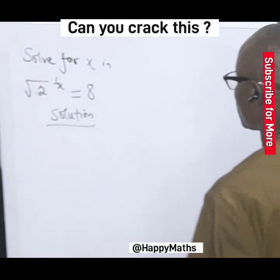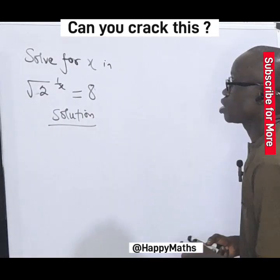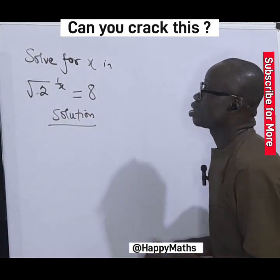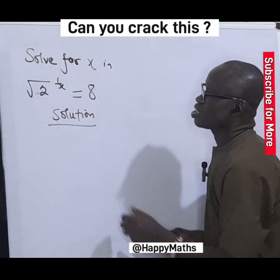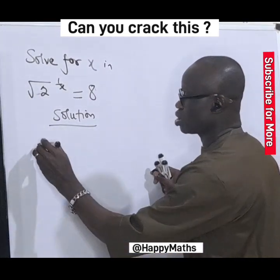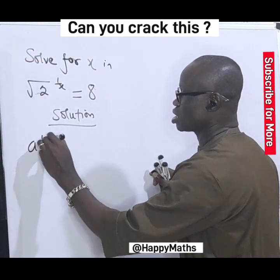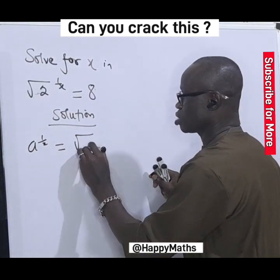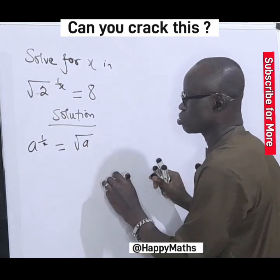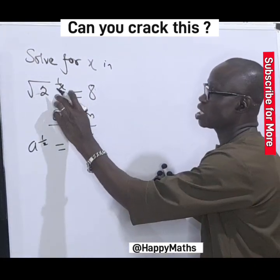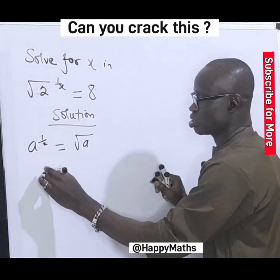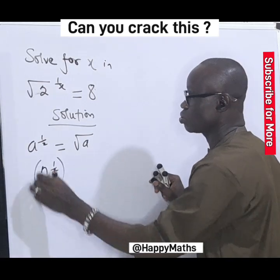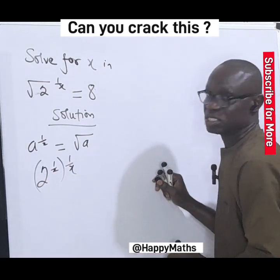Hello friends, we have a question from the book. Recall that a raised to the power of 1/3 is the same thing as the cube root of a. Now let's apply this here, so this will give us 2 raised to the power of 1 over 3, times 1 over x.